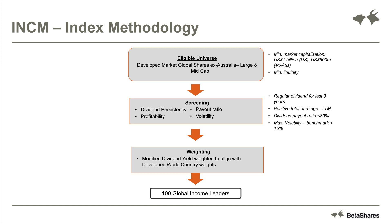How does this exposure work? First, it looks at the global universe of developed markets — no emerging market exposures, purely developed markets — and looks for large cap and mid-cap shares ex-Australia. It then runs a screening process to ensure dividend sustainability, screening for: dividend persistency — how regularly has the company maintained its dividend; profitability — if the company is profitable it has a greater likelihood of paying dividends; payout ratio within reasonable measures; and business volatility — stable businesses tend to have greater persistency of dividends. It then weights those businesses according to global benchmarks to ensure diversification and high income.